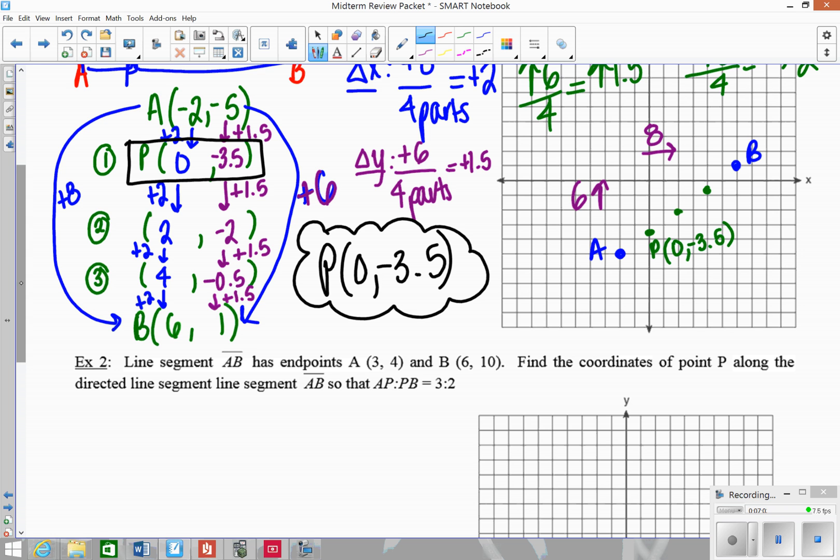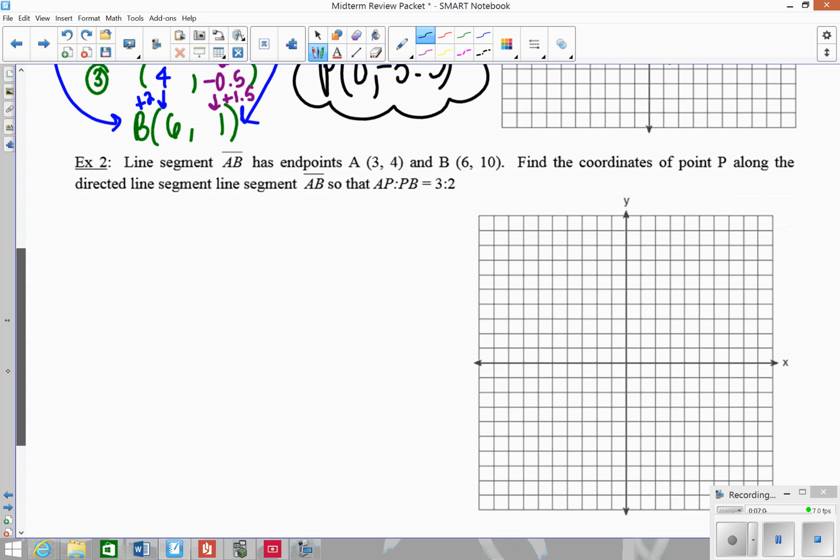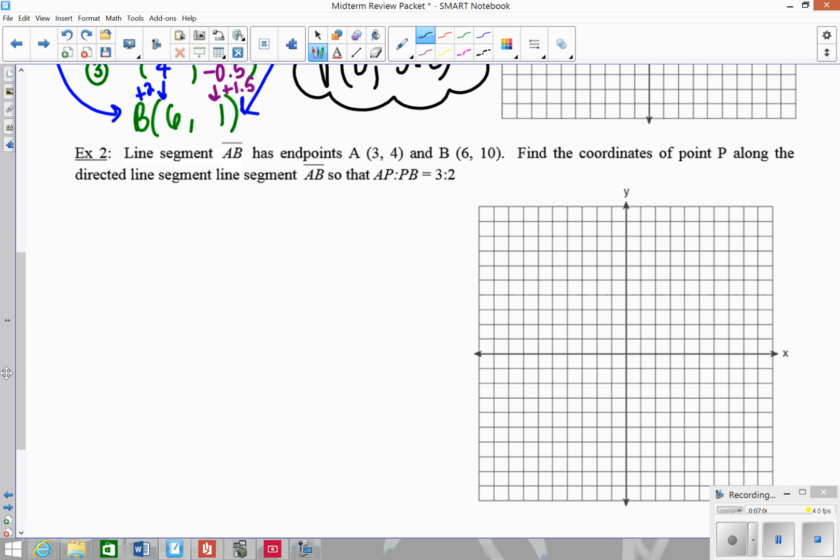Let's do one more example, and for this one we are just going to do this one algebraically. So I'm starting with this segment. So I have a segment, so always draw out a picture first so that you can envision it. So I have segment AB, and I need to divide this, so I need to find point P so that it partitions this segment into the ratio of 3 to 2.